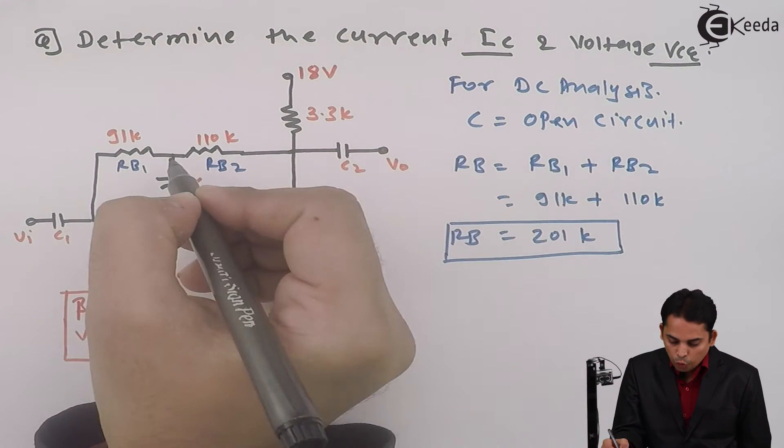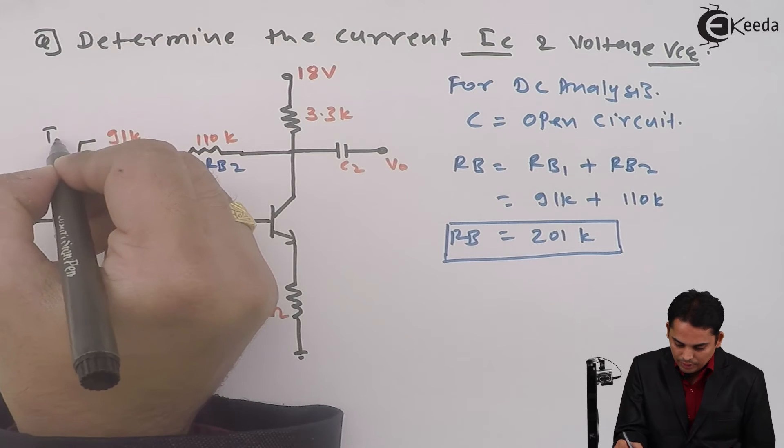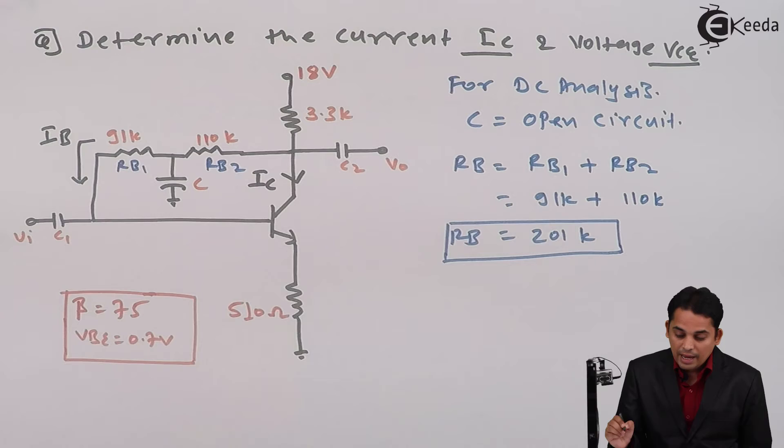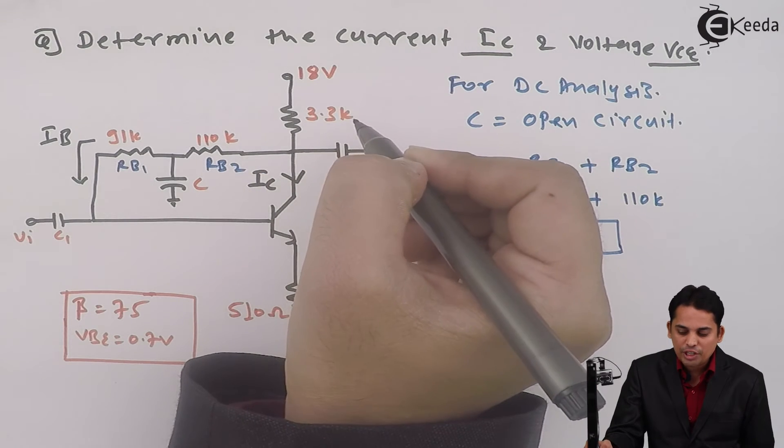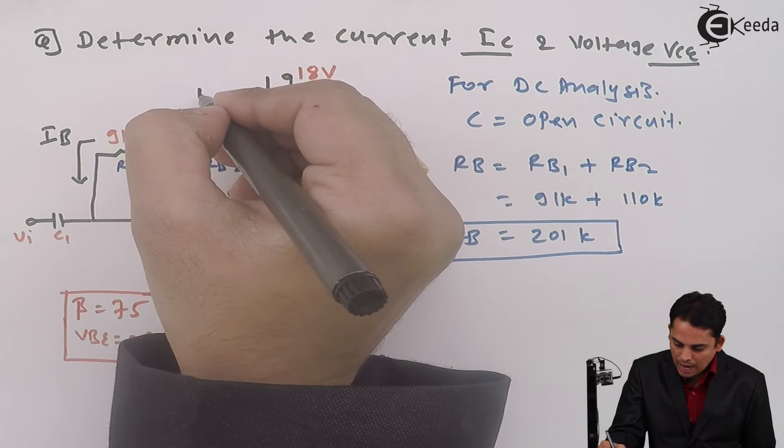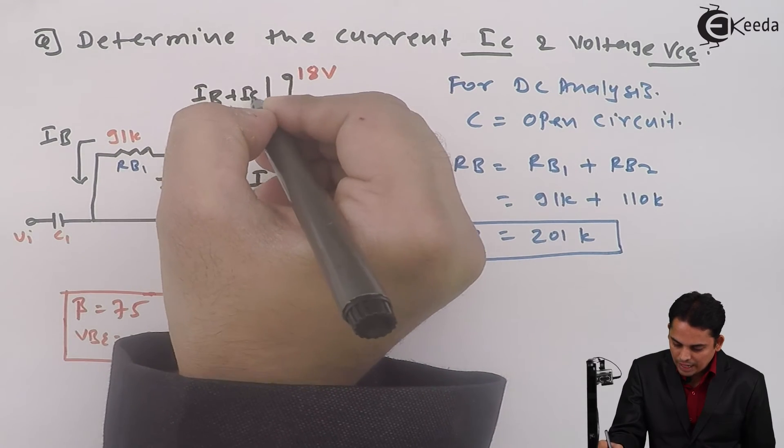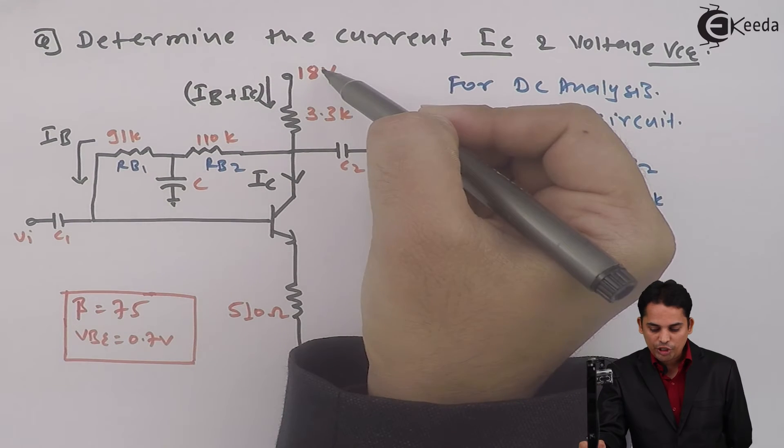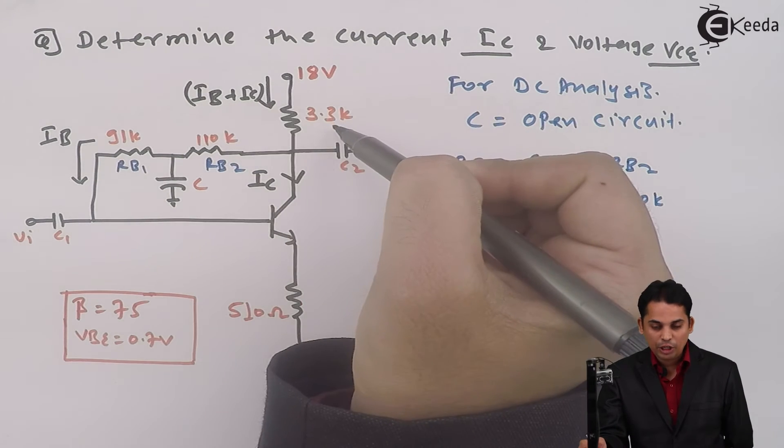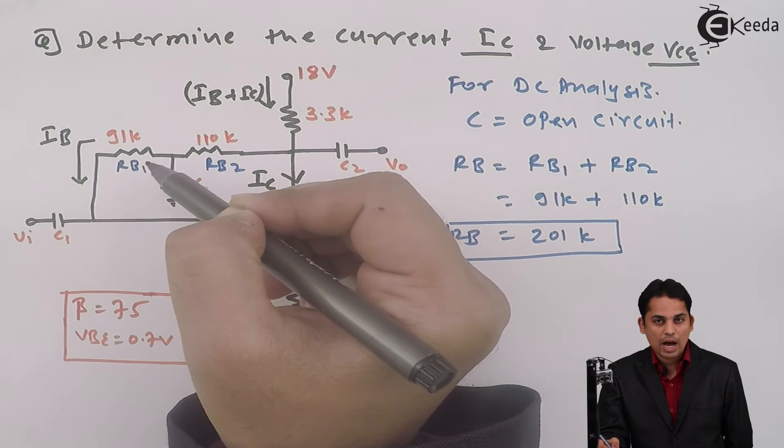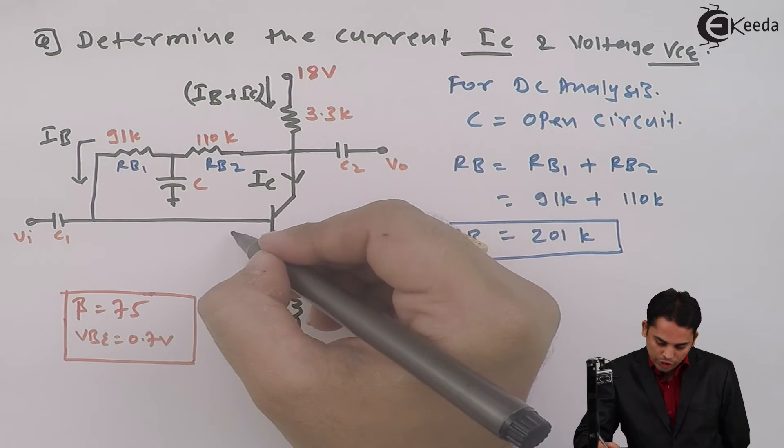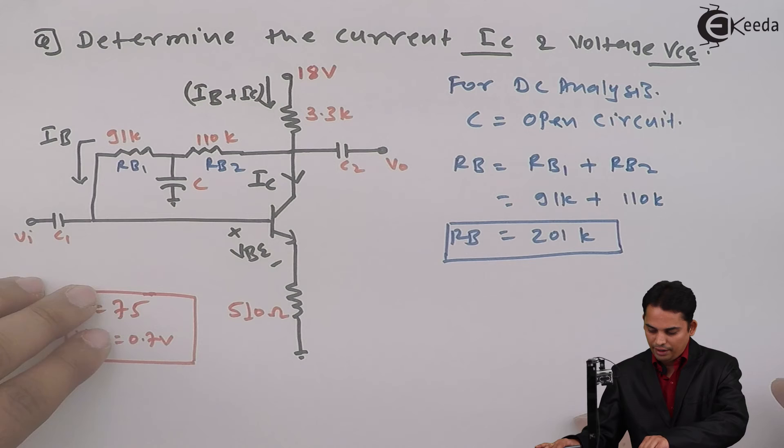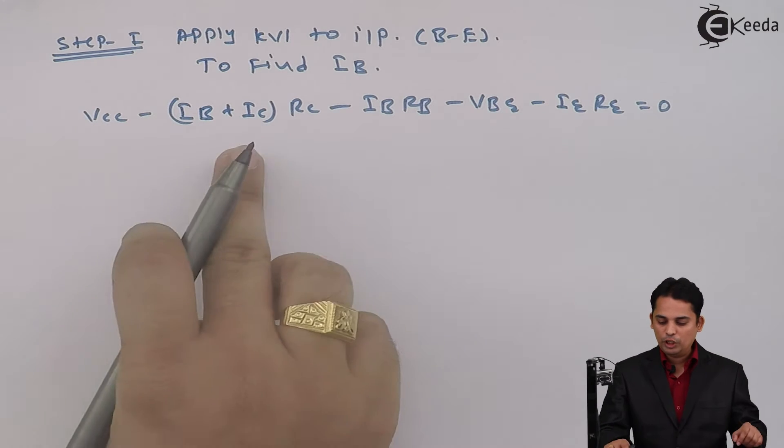So current flowing from base is nothing but IB, similarly current from collector is nothing but IC, and hence current from 3.3 kilo ohm resistor will be IB plus IC. So whenever I am applying KVL to input, equation will become VCC minus (IB + IC) into RC minus IB into RB minus VBE minus IE into RE, and hence we have got this particular equation.